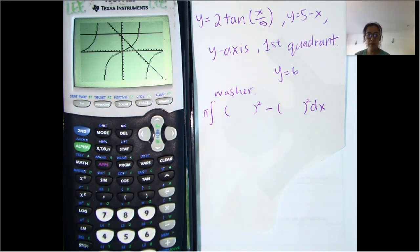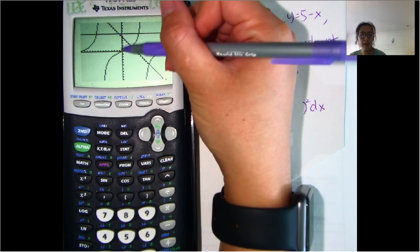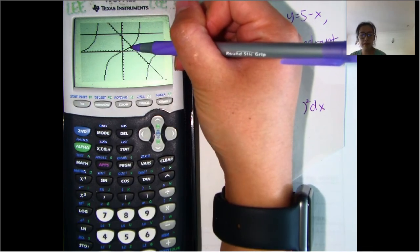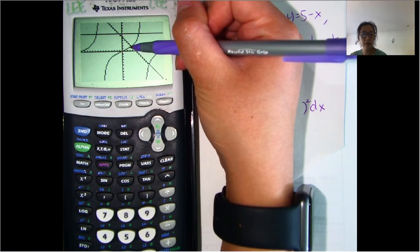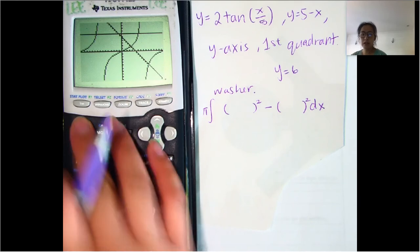And then the bounds are going to be, so the left bound is the Y axis so that's zero and then going up to whatever that bound right there is. So we're going to want to find that intersection point. So to do that, let's write the zero first before we forget